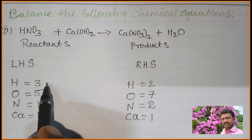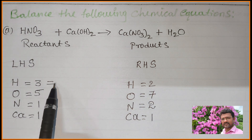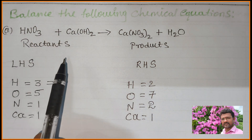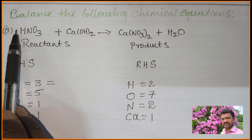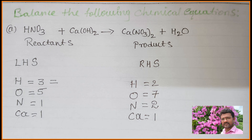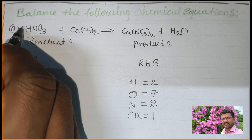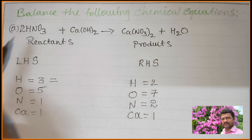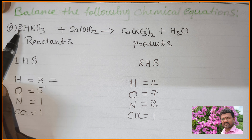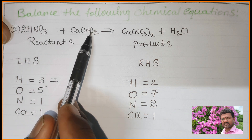We need to raise the coefficient numbers. Suppose we raise the number to 2 for HNO3. When we put 2 in front of HNO3, then we get 2H, 2N, and 2 times 3 = 6 oxygen atoms. So with coefficient 2, LHS now has 2H from HNO3 and 2H from Ca(OH)2 — total 4 hydrogen atoms.